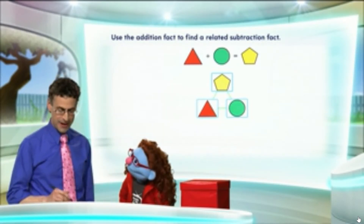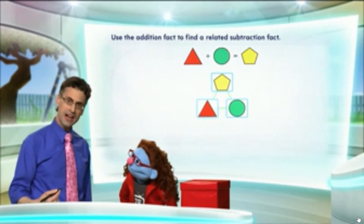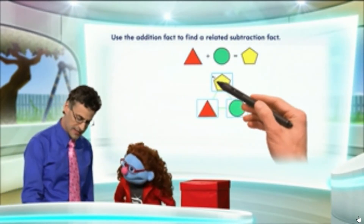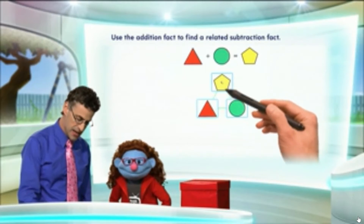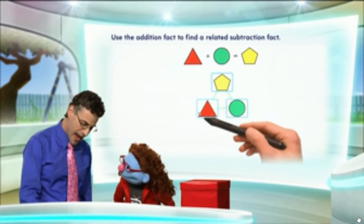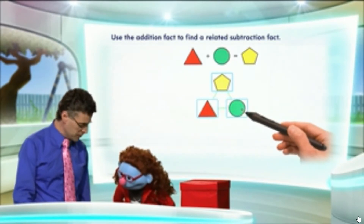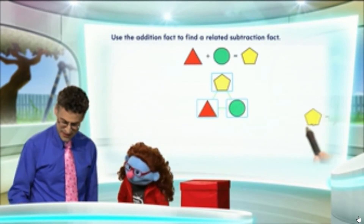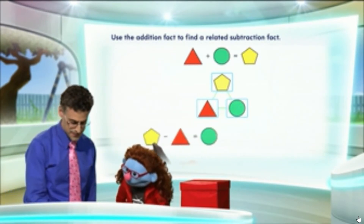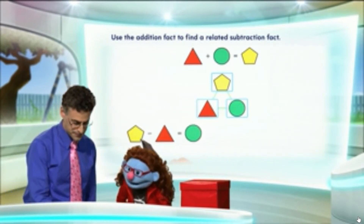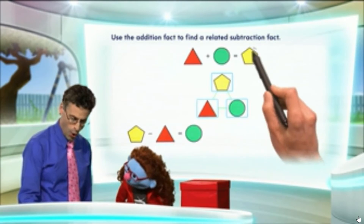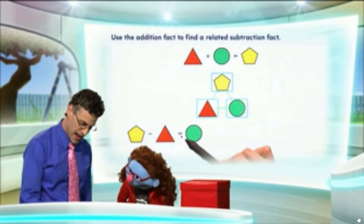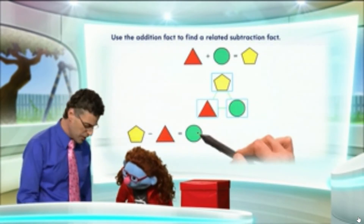Now, let's think about how we can write subtraction facts. One thing we can do is say, well, if I take the whole and I subtract this part, then I'm left with that part. So, that would look like this. There is the whole, and I subtract a part, and I'm left with the other part.